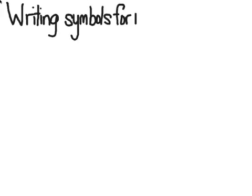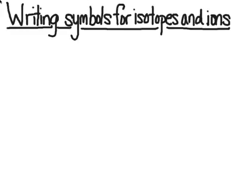Welcome to the uChem tutorial on writing formulas for isotopes and ions. We're going to start this tutorial by looking at isotopes. We're going to write isotopic symbols after looking at the definition of an isotope. Then we're going to define ions and look at ionic symbols. After that we'll do some practice so you understand how to write these symbols and then how to dissect and gain meaning from these symbols.